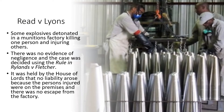A quick note on the difference between negligence and Rylands and Fletcher: in negligence we need a duty of care, a breach of duty, and causation — there is an element of fault. Rylands and Fletcher is a strict liability tort, so if it has happened, there is liability. In Read v Lyons, explosives detonated in a munitions factory, killing one person and injuring others. There was no evidence of negligence and the case was decided using Rylands and Fletcher, but the House of Lords held no liability arose because the persons injured were on the premises and there was no escape from the factory.